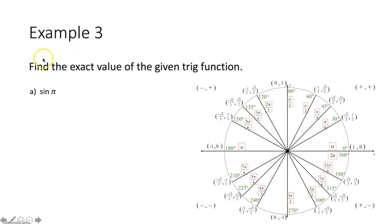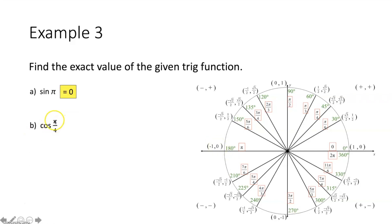Example 3 says find the exact value of the given trig function. First, evaluate sine of π. We locate π radians on the unit circle — that's right here, equivalent to 180 degrees. Sine of an angle equals the y-coordinate of the corresponding point. The point negative 1 comma 0 corresponds with π radians, so sine of π equals the y-coordinate, which is 0. For part b, evaluate cosine of π over 4. Locating π over 4 on the unit circle — equivalent to 45 degrees — cosine equals the x-coordinate, which is √2 over 2. Therefore, cosine of π over 4 equals √2 over 2.